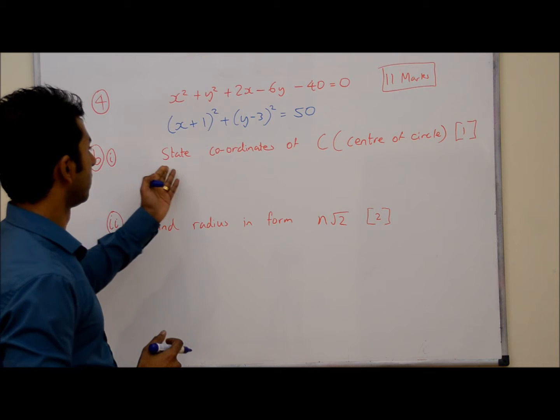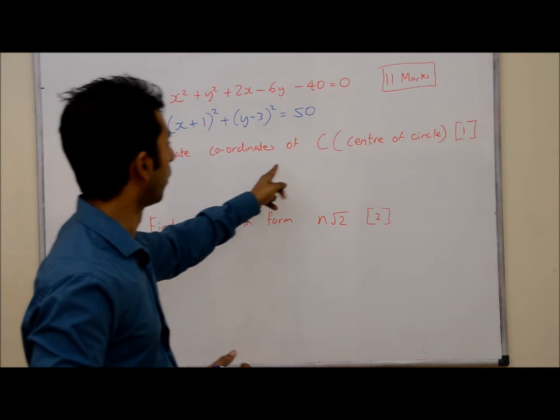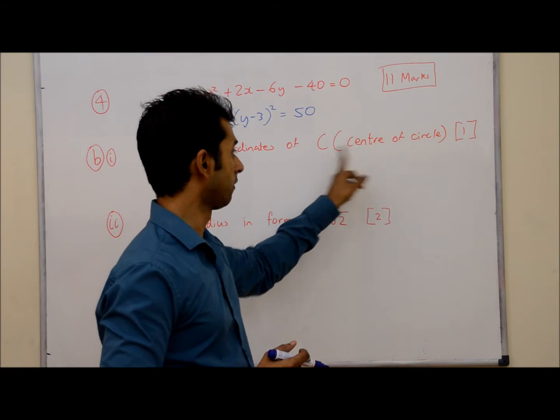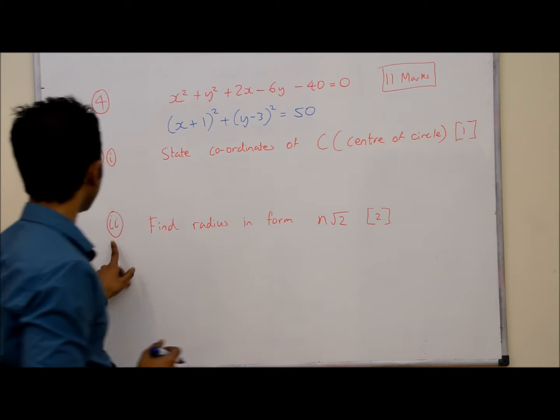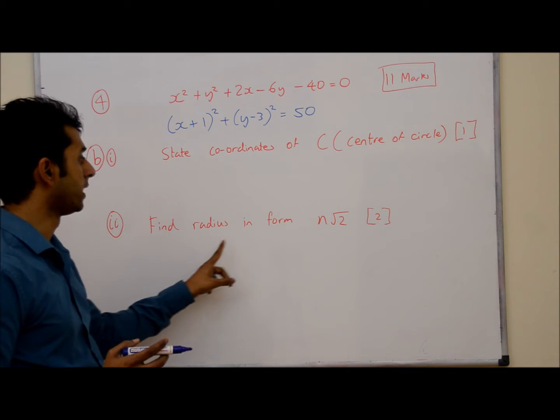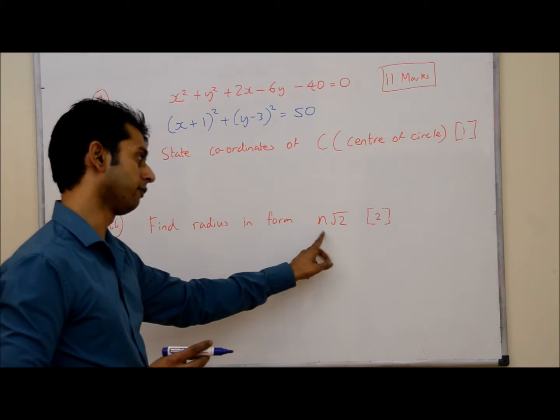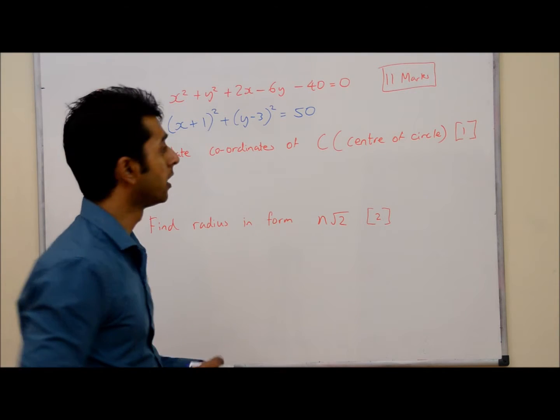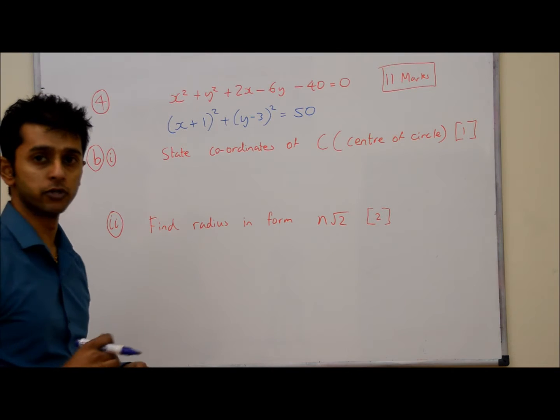So, question B. Part 1 is state the coordinates of the centre of the circle C for one mark, and part 2 is to find the radius of this circle and give your answer in the form n√2 for two marks. If you want to have a go at this, feel free to pause the video now.